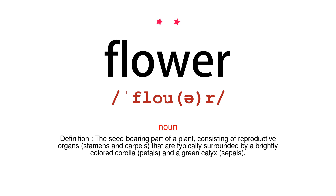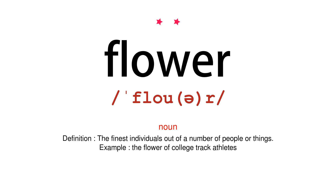Noun. The seed-bearing part of a plant, consisting of reproductive organs that are typically surrounded by a brightly colored corolla and a green calyx. Definition: the finest individuals out of a number of people or things. Example: the flower of college track athletes.